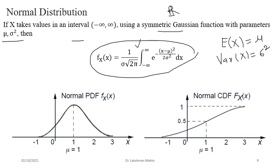If you find the expectation of this random variable it equals μ, and the variance equals σ². So μ and σ² are the parameters of the normally distributed random variable. The plot of the density of normal distribution shows that it is symmetric: 50% of the area falls before the mean and 50% after the mean, with tails on both sides. If you find the CDF up to x=μ, it equals 50%, confirming the symmetric distribution.